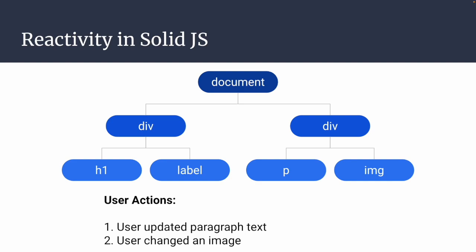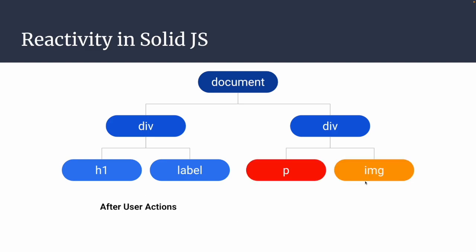That's how SolidJS helps update and render the UI smoothly with high performance. For example, if a user does two operations — updating the paragraph text and changing an image — SolidJS will update only those two nodes. After user actions, only those two specific nodes are updated without re-rendering any other structure, which greatly increases performance.